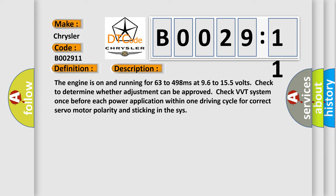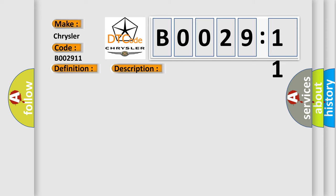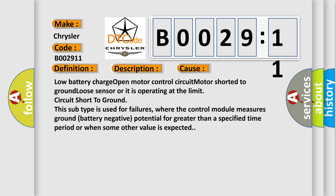This diagnostic error occurs most often in these cases: low battery charge, open motor control circuit, motor shorted to ground, loose sensor or it is operating at the limit. Circuit short to ground - this subtype is used for failures where the control module measures ground battery negative potential for greater than a specified time period or when some other value is expected.